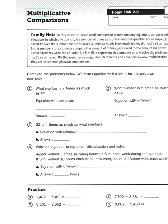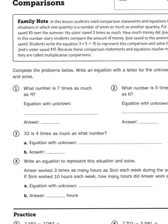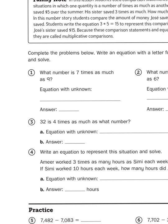So it says, complete the problems below, write an equation with a letter for the unknown and solve. What number is seven times as much as nine? The word times right there is a dead giveaway. It says, hey kids, multiply. So what's my multiplication equation? Well, it's just seven times nine.